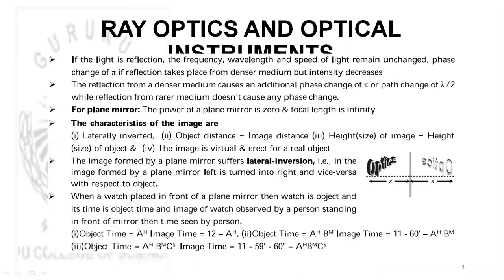Moving further, coming to the phenomenon of reflection: when reflection takes place from a denser surface, there will be a phase change of pi radians or lambda by 2. When it is taken from a rarer surface, there will not be any change in phase difference. During reflection, the frequency, wavelength, and speed of light will remain the same.